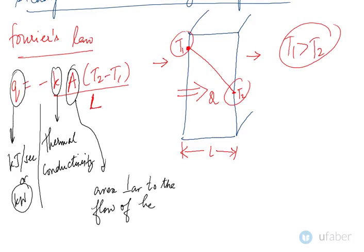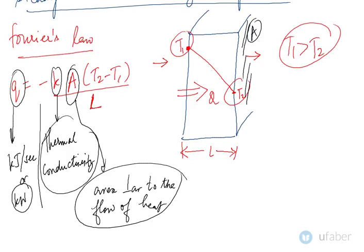This is the area perpendicular to the direction of flow of heat. T2 minus T1 is the temperature difference and L is the thickness of the wall. Thermal conductivity in this case is assumed to be a constant value.